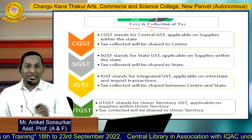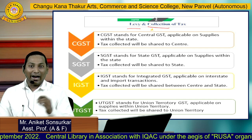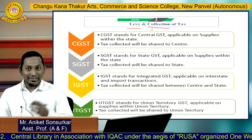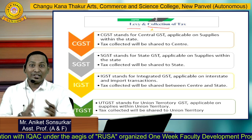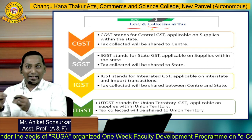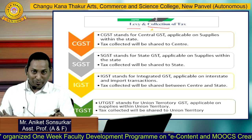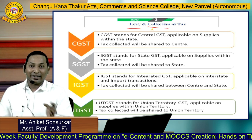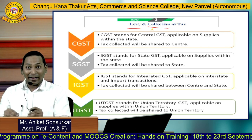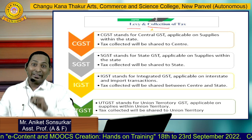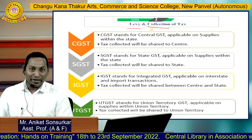GST has been further classified into four different structures: CGST, SGST, IGST, and UTGST. CGST stands for Central Goods and Service Tax, which is applicable on supplies within a state. For example, if the supplier is from Maharashtra and the recipient is from Gujarat, CGST is not applicable because that is an interstate transaction. CGST is basically applicable for intrastate only — meaning the supplier and recipient must both be within Maharashtra.